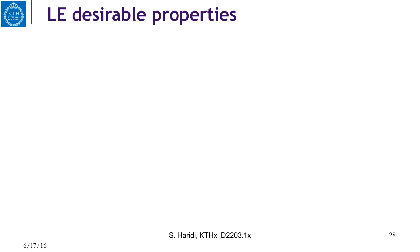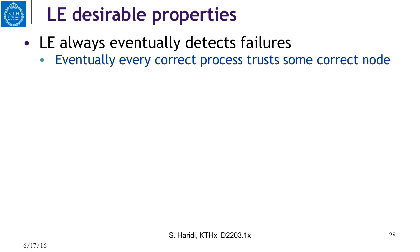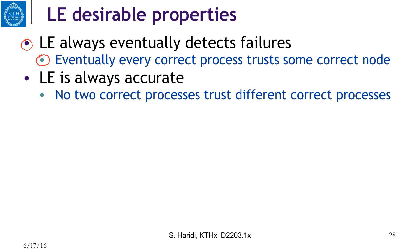Let us see how to specify the properties of LE in terms of safety and liveness. LE always detects failures — eventually every correct process trusts some correct process. Second, LE is always accurate — no two correct processes trust different correct processes; they must trust the same correct process.